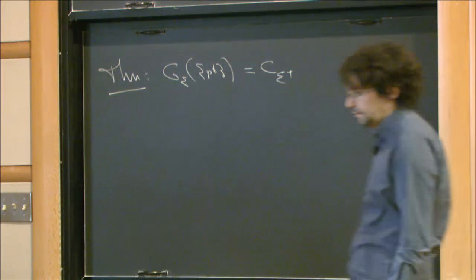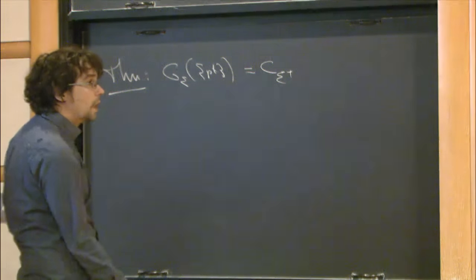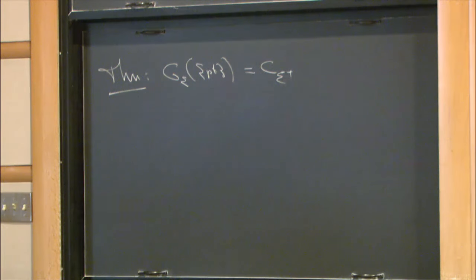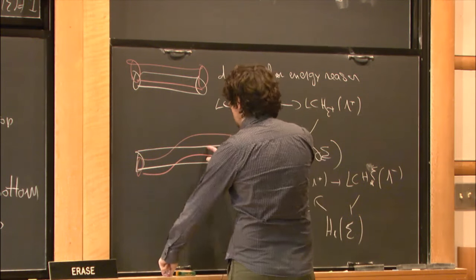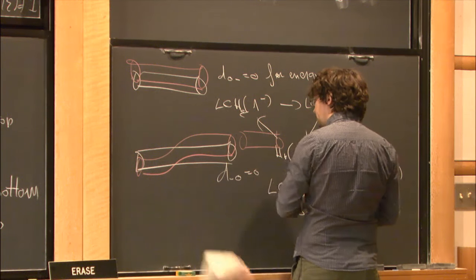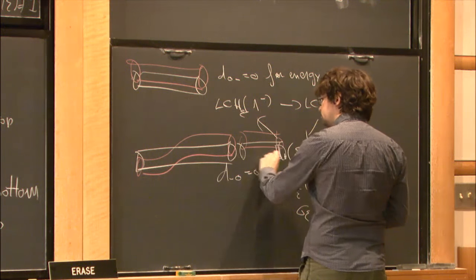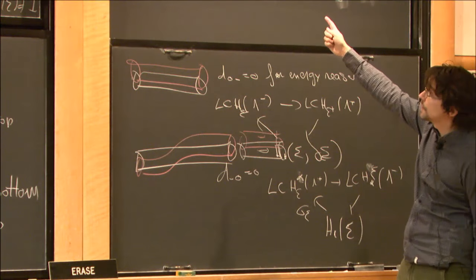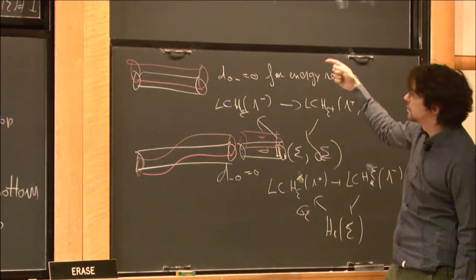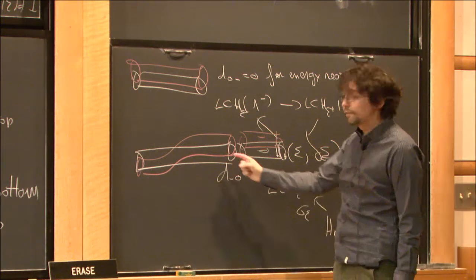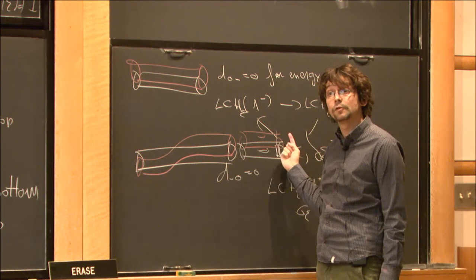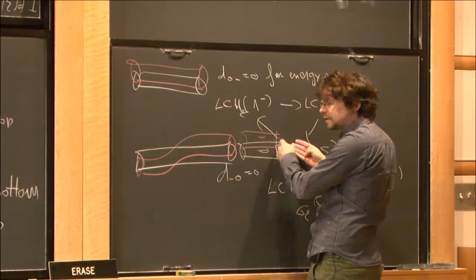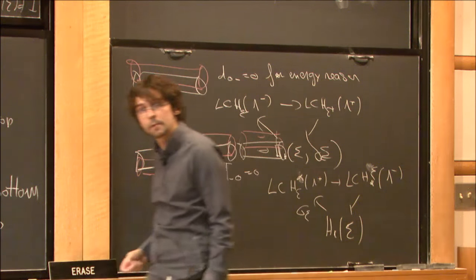Proof of Theorem A. You can play further with this: if you glue two cylinders with this type of perturbation and stretch the neck, you can see that the fundamental class is functorial. The map induced by a cobordism sends the fundamental class at the bottom to the fundamental class at the top, because the point lies in a specific place.